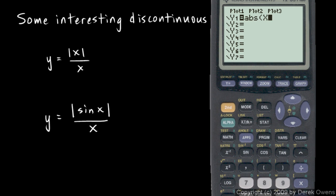So punch that absolute value of x, close parentheses, divided by x, and let's graph that. And look at that. And if you think about it a little bit, that should make sense.